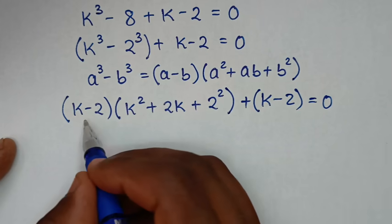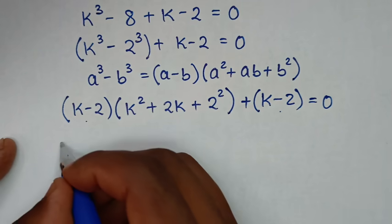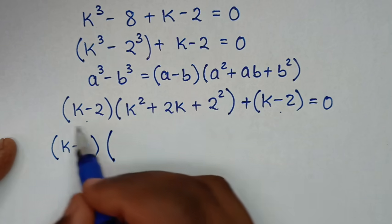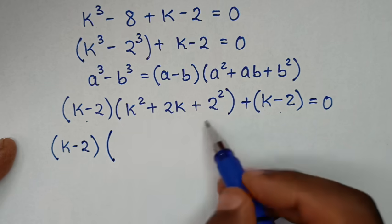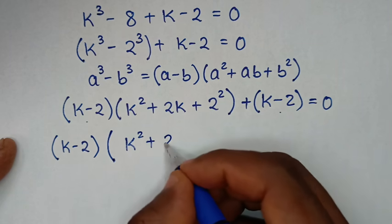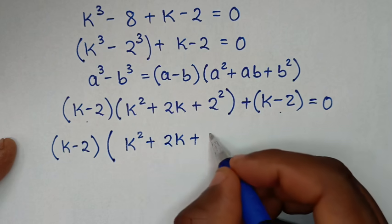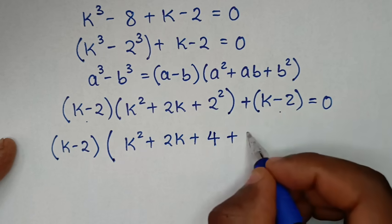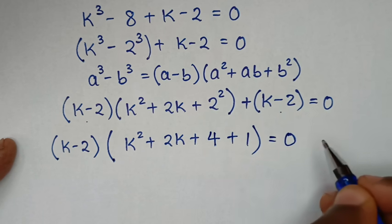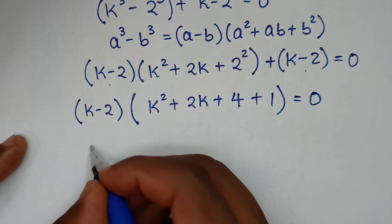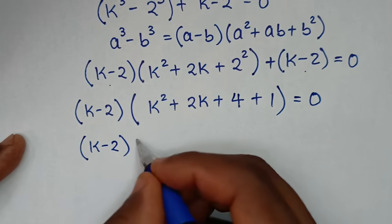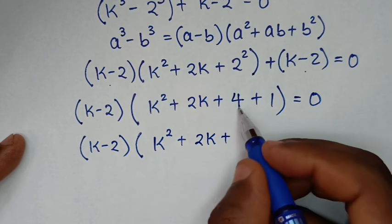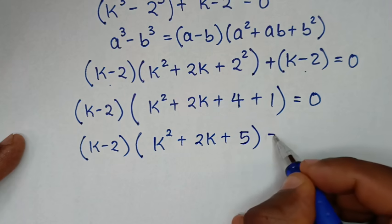Then k minus 2 is common, so we factorize and take k minus 2 out of the bracket. k squared plus 2k plus 4 divided by k minus 2, plus k minus 2 divided by k minus 2 is 1, giving us k minus 2 times k squared plus 2k plus 4 plus 1, which is k squared plus 2k plus 5, equals 0.